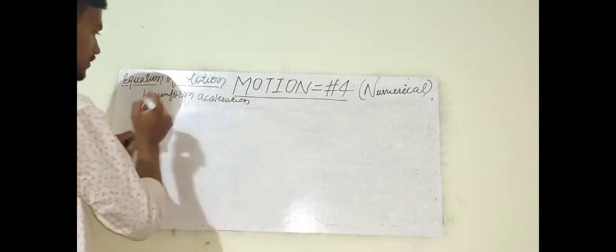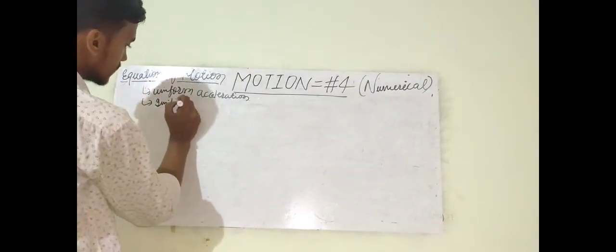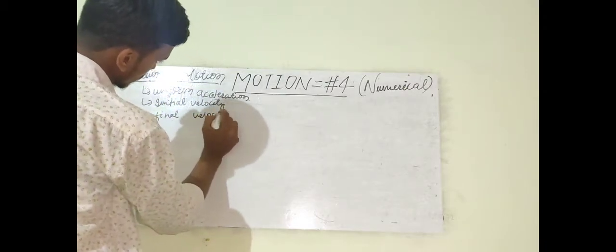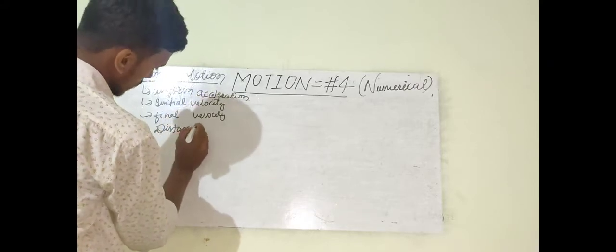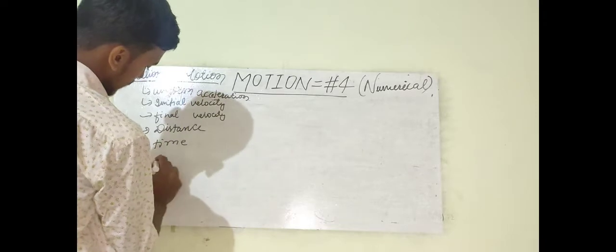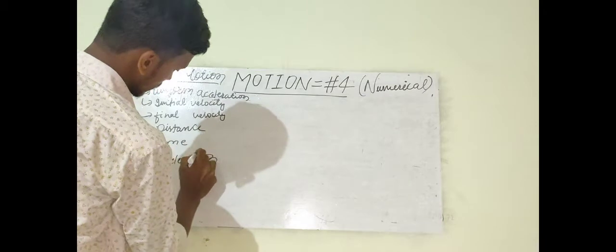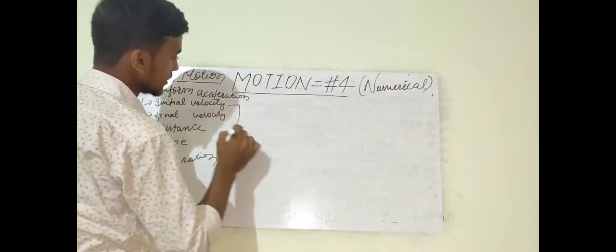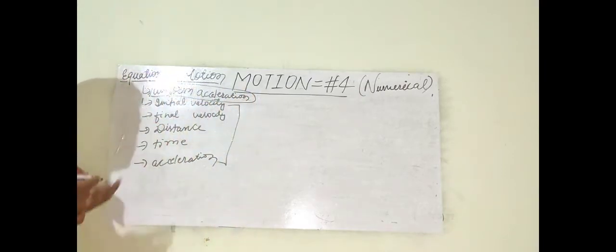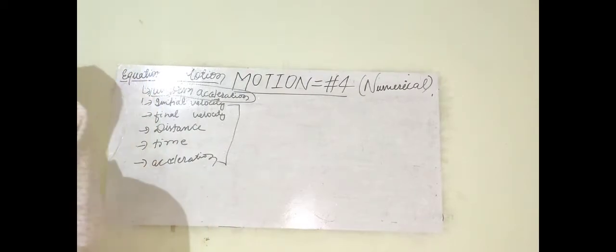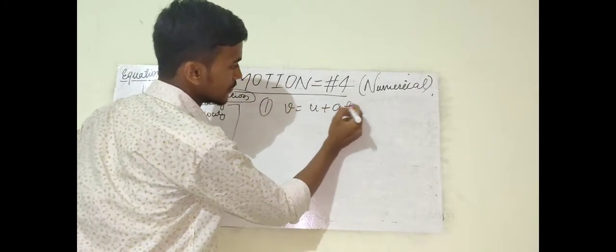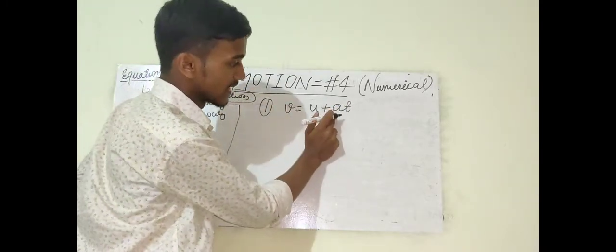The first equation of motion is V = U + AT, where V is final velocity, U is initial velocity, A is acceleration, and T is time. Let's derive it. As we know, acceleration equals change in velocity upon time, that is A = (V - U) / T.